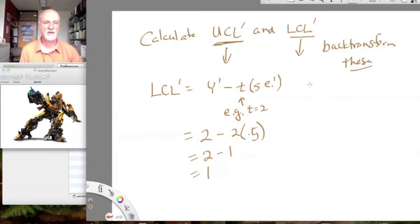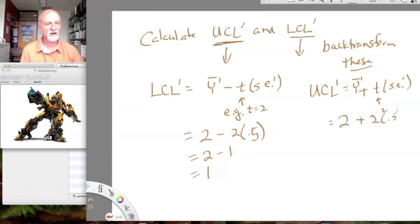Likewise, we calculate our upper confidence limit that's transformed, which is the transformed mean plus T times the transformed standard error. And so, then we have 2 plus 2 times 0.5 or 3.